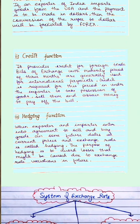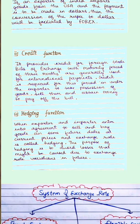The third function is the hedging function. Hedging is when an exporter and importer enter into an agreement to buy and sell goods on some future dates at the current price and exchange rate. The purpose of hedging is to avoid losses that might be caused due to exchange rate variations in the future. It implies protection against the risk of variations in the foreign exchange rate.